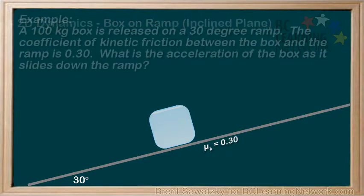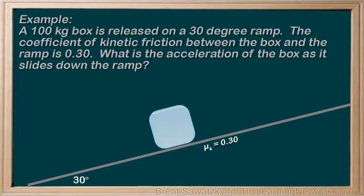Our example: a 100 kg box is released on a 30 degree ramp. The coefficient of kinetic friction between the box and the ramp is 0.30. What is the acceleration of the box as it slides down the ramp?